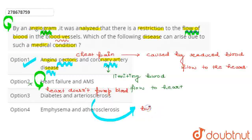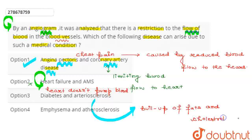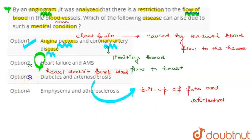The buildup involves fats and cholesterol. The last option is emphysema and atherosclerosis. So the correct answer remains option 1, and the other options are wrong options given for this question.